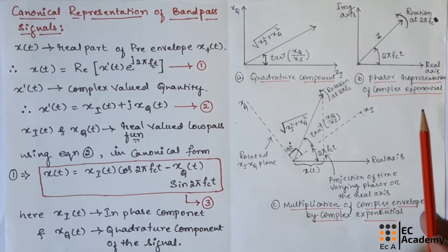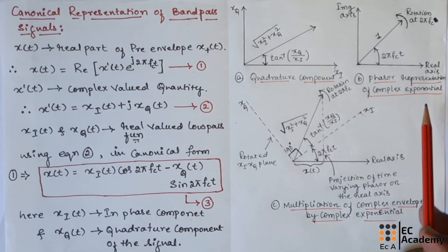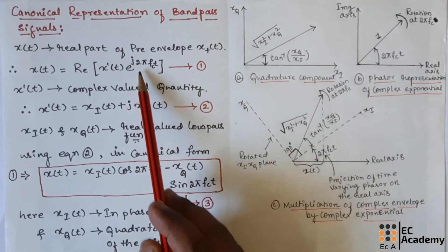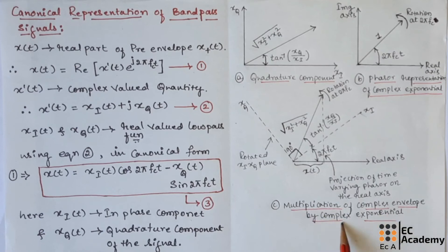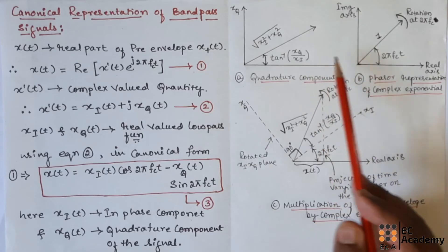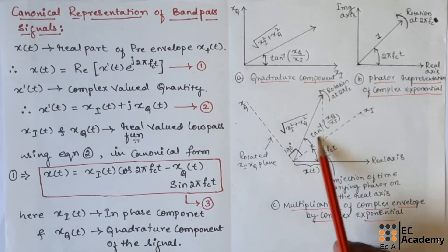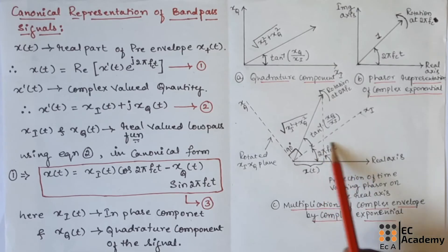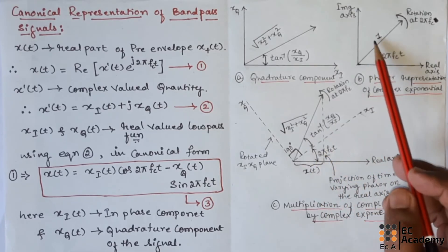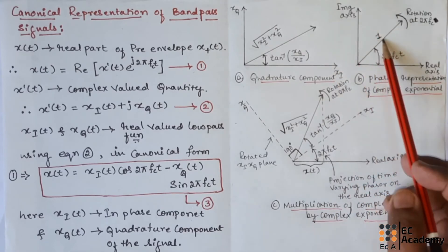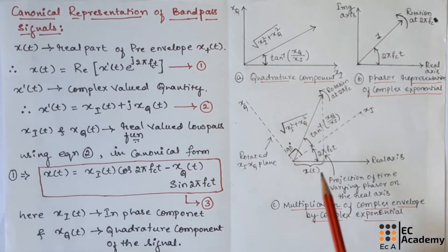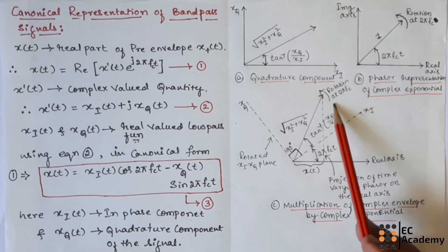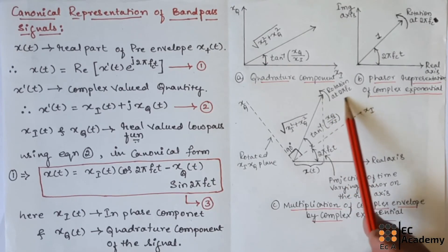Figure B shows the phasor representation of the complex exponential e^(j 2πfct). Figure C shows the multiplication of the complex envelope by the complex exponential. If we multiply the complex exponential and complex envelope, the angles of these two phasors are added. We can see the angle is added: we have tan inverse here and 2πfct here. The angle is added and the length is multiplied, giving square root of xI-squared plus xQ-squared. In Figure C, we can observe that the plane is rotated with an angle of 2πfc.